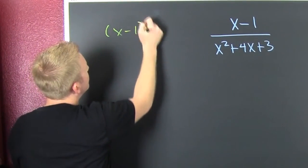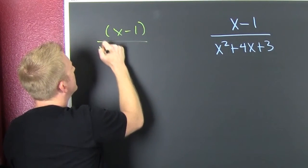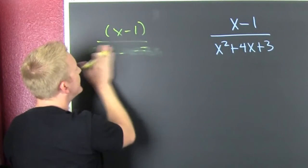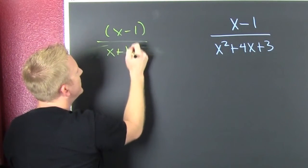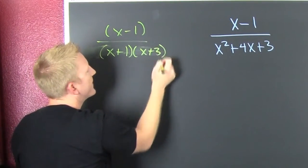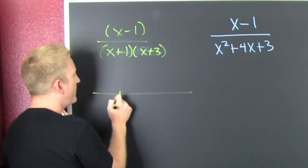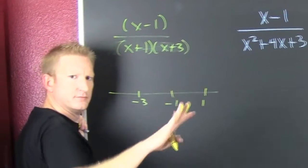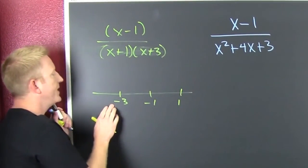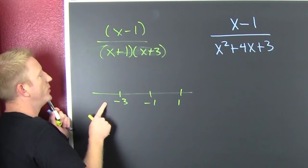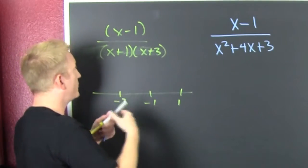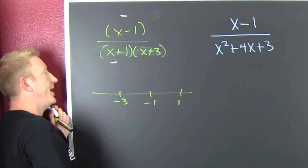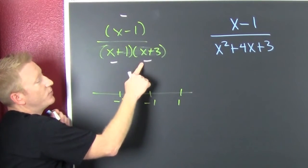Now I'm testing in fully factored form: (x - 1) over (x + 1)(x + 3). I put -3, -1, and 1 on my number line. I need a value to the left of -3, so I'll use -4. I put -4 in: that gives me a minus in the numerator, and minus for both denominator factors — I only care about the sign, not the actual value.